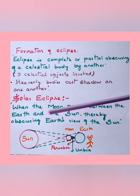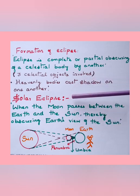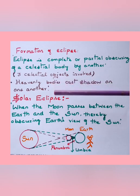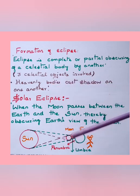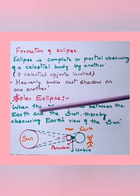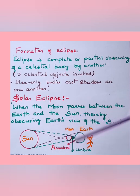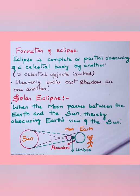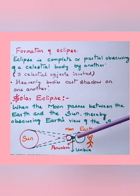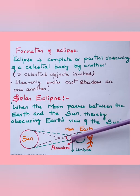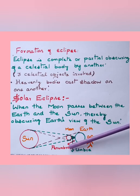Solar eclipse occurs when the moon passes between the earth and the sun, thereby obscuring the earth's view of the sun. A trick to remember: when solar eclipse occurs, we are not able to see the sun — the sun is eclipsed. When the moon passes between the earth and the sun, a shadow of the moon falls on the earth. The dark center portion of the shadow is called umbra and the lighter outer portion is called penumbra.